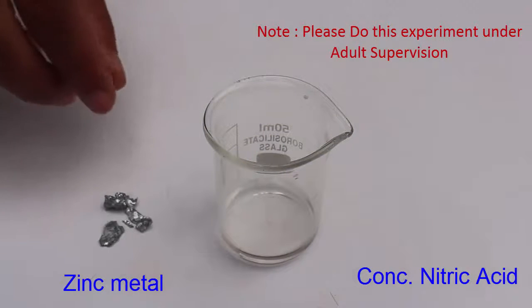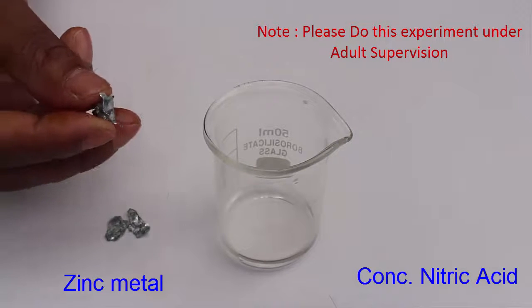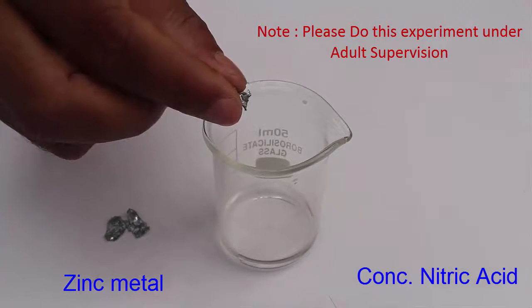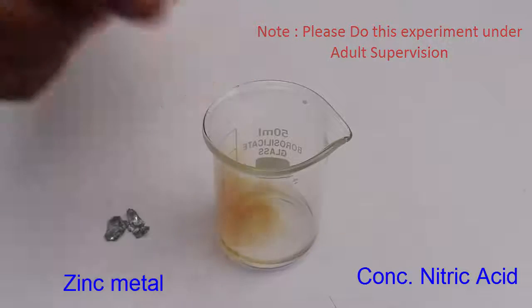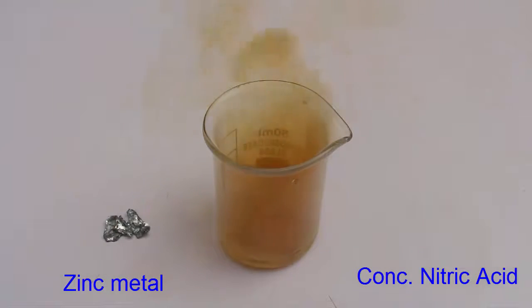Now to this concentrated nitric acid we are going to add the zinc metal. So let's see what happens. This is concentrated nitric acid, to this we are adding zinc metal. How vigorously the reaction is taking place.